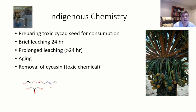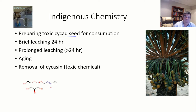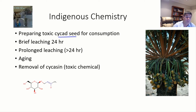One particular example of this is the cycads. Cycad seeds can provide a number of different types of foodstuffs for Aboriginal people, but in order for that to happen, some very important chemicals need to be removed from the seeds, particularly the cycasin. This is a quite complex chemical.